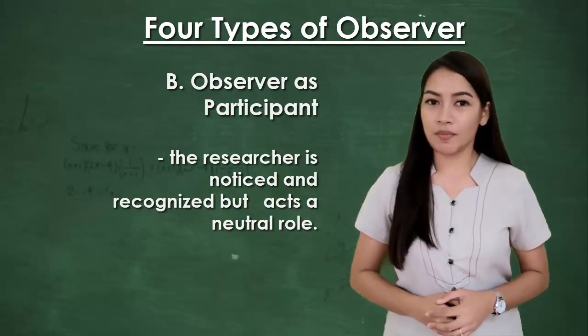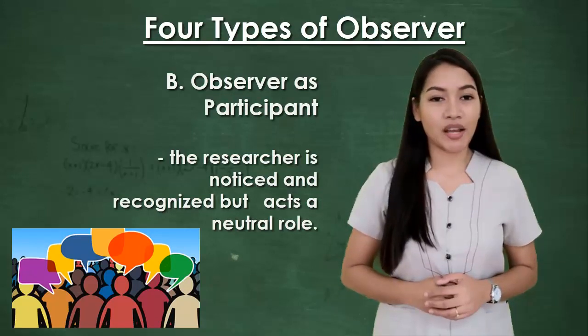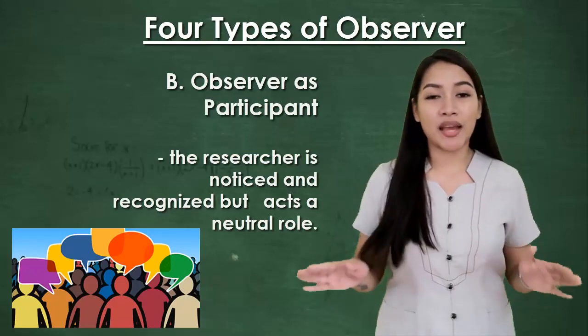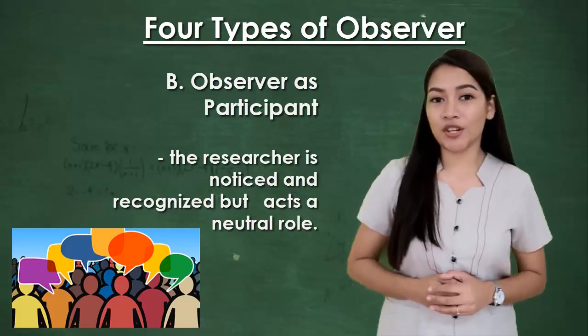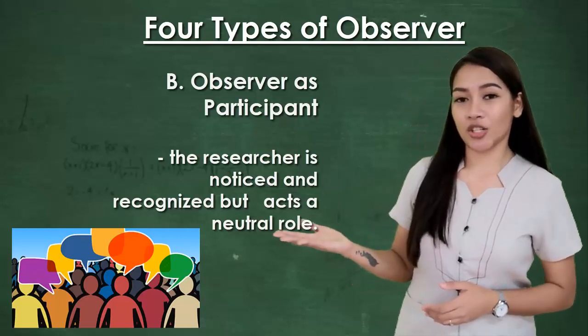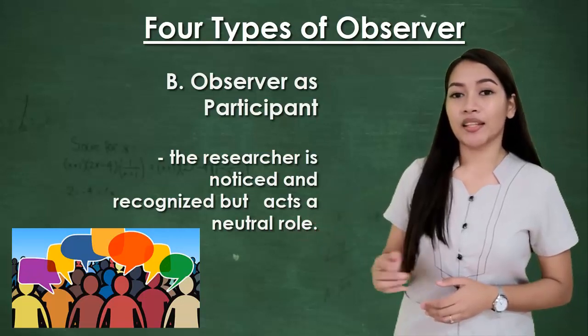Two: observer as participant. Here the researcher is known and recognized by the participants, and in many cases the participants know the research goals of the observer. There is some interaction with the participants, but the interaction is limited. The researcher's aim is to play a neutral role as much as possible.